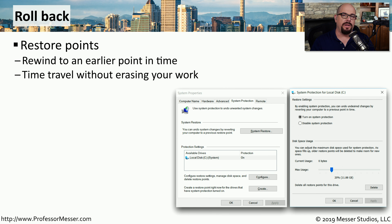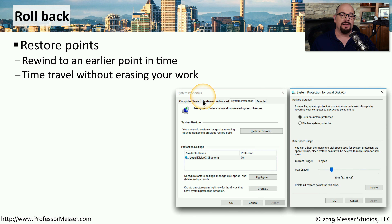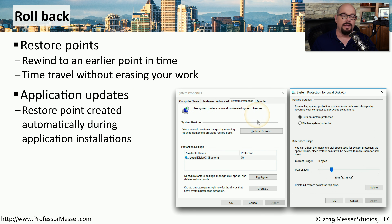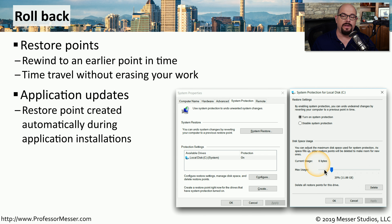If you make a change to your Windows configuration and it creates a problem, it would be a little bit drastic to re-image the entire system. Instead, you can use the Restore Point function inside of Windows to go back in time to a previous configuration point. This allows you to move your configuration back to a previous config but doesn't touch any of your personal files. The Restore Point configuration is set in System Properties under System Protection.